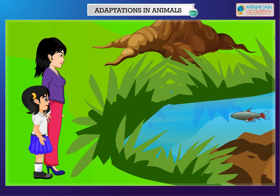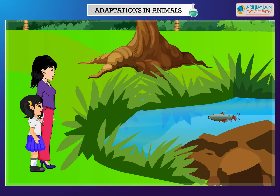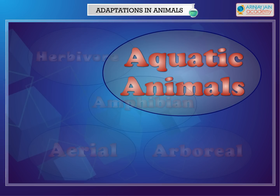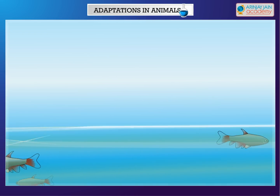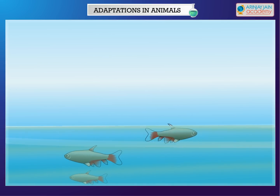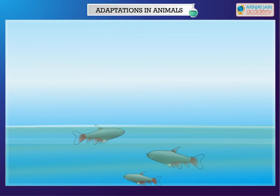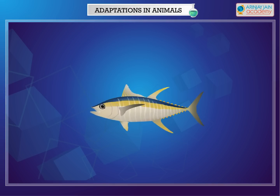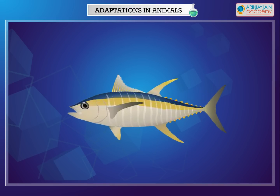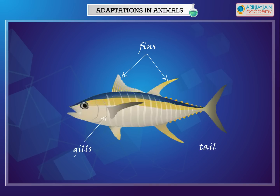Aquatic Animals. Animals that live in water are called aquatic animals. Aquatic animals need special structures to move easily in water, breathe in water, and prevent water from being absorbed into their bodies. A fish has a boat-shaped body which helps it to move easily in water. The fins help it to swim and the tail helps in changing direction. Fishes have gills that help them to breathe in water. The body of a fish is covered with scales and does not let water come in contact with the skin.